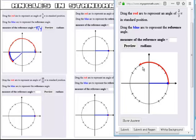So right here, right? So this is my 2 pi over 3.